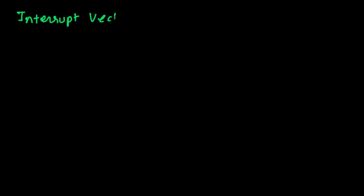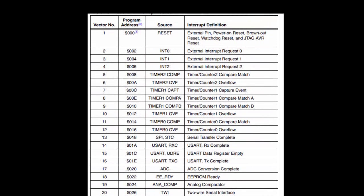The place where the actual routine is stored — what should be done if a certain interrupt occurs — is called the interrupt service routine. Now we'll go ahead and look at the interrupt vector table for the ATmega32. As we have seen before, there should be no surprises: it should have all the things we have discussed.